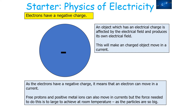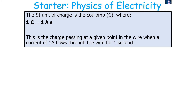We notice electrons more regularly because free electrons are small particles. Free protons and positive metal ions can also move in currents, but the force needed is too large to achieve at room temperature because they have too much mass. The SI unit of charge is the coulomb, where 1 coulomb is 1 amp second — the charge passing a point in a wire when the current flows with 1 amp through the wire for 1 second.